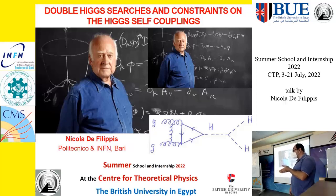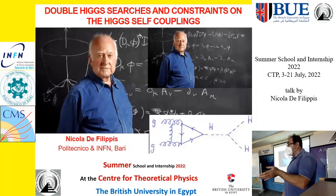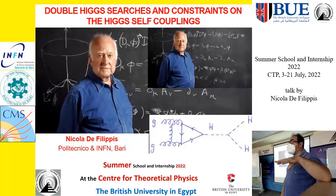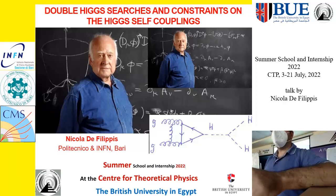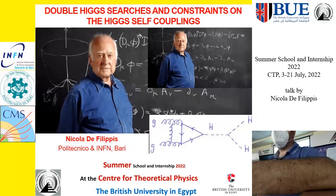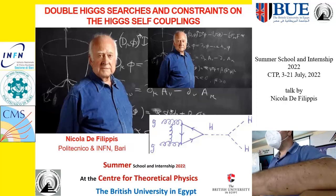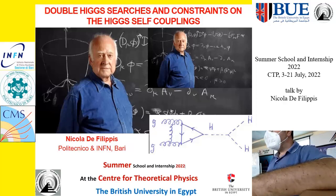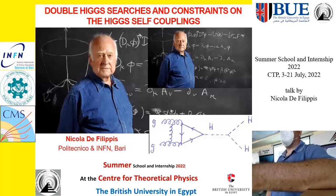If we find the value expected by the standard model, we will be sure about the Higgs mechanism and the shape of the potential, because this lambda we will discuss is the same lambda which appears in the Higgs potential. It's the triple Higgs coupling — and the quartic is related. The way to access these couplings is to look for double Higgs production.